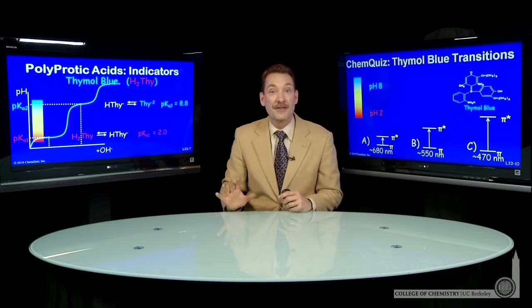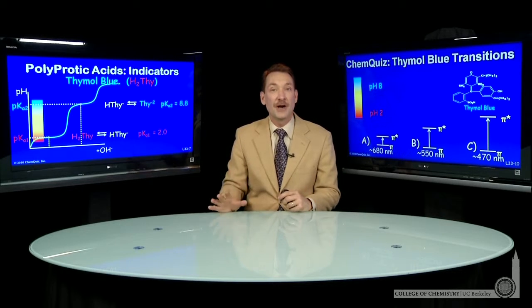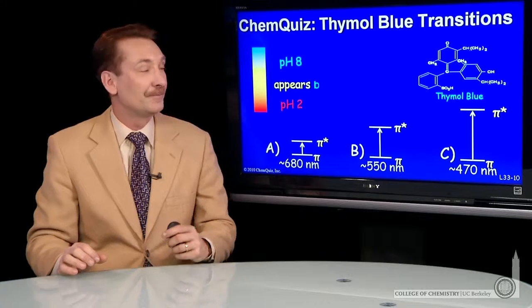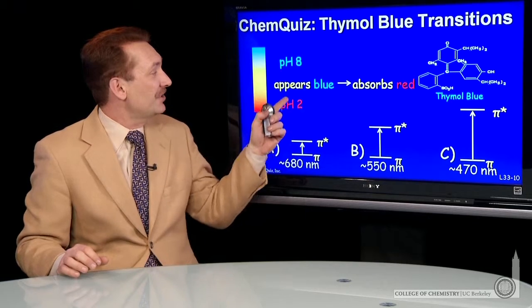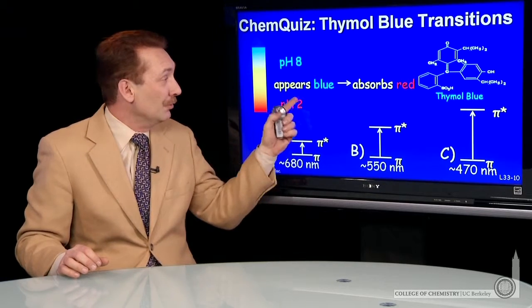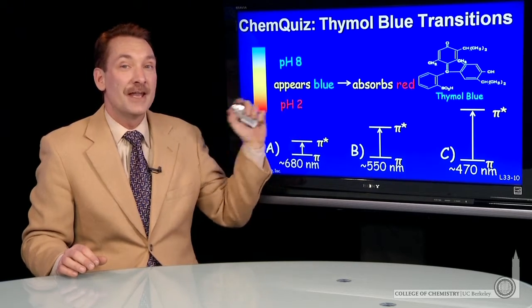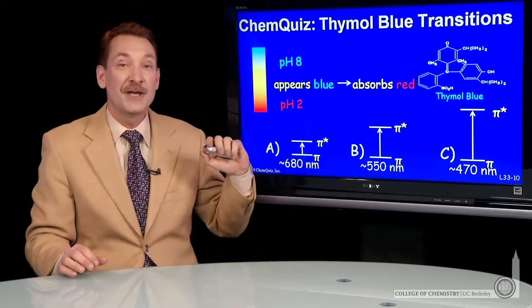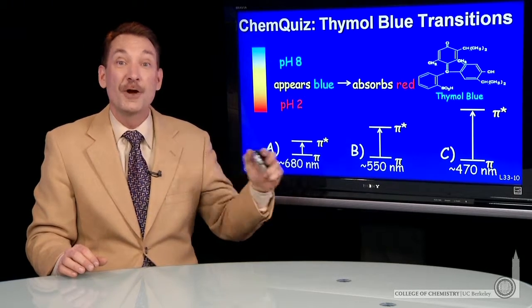We're talking about thymol blue in the region where we have a pH of 10. At pH 10, the blue form predominates. Now, if a solution appears blue, where does it absorb?